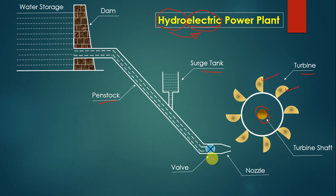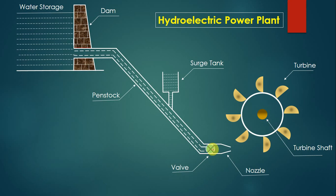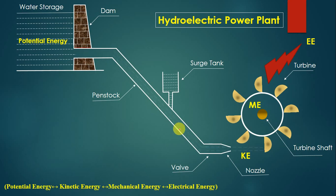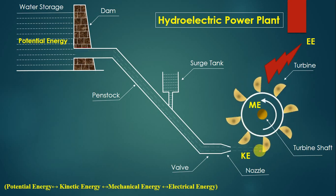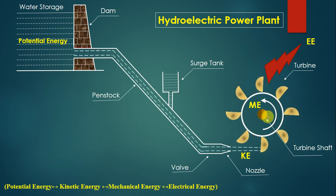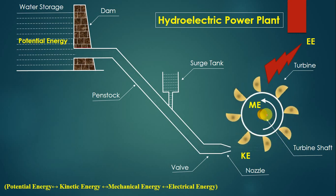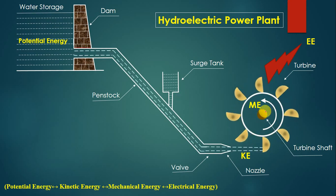We have seen what is the dam, penstock, valve, nozzle, and turbine. Now let's understand the working of this power plant. Assume the plant is currently not working. To start generating electricity, we open the valve so water flow starts. The high-velocity jet of water comes out and strikes on the bucket of the turbine, giving force to it. Because of this force, the bucket and blade start rotating, the blade is connected to the rotor, so the rotor starts rotating, and as the rotor rotates, the shaft also starts rotating, giving us mechanical energy as output.